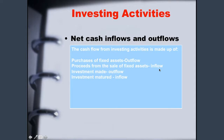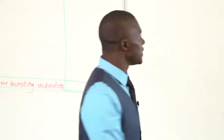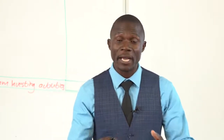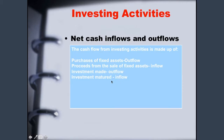Then there is investment made — you have money in your business but don't need it now. Instead of keeping it in the business, it is better to invest it, so it is an outflow because you take money out of the bank account of your entity. Then the last is investment matured — when the investment period lapses or ends, the money comes back to your business, and we call it an inflow of cash deposited directly into the business bank account.